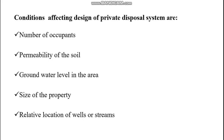Conditions affecting the design of a private disposal system — cesspool or septic tank — include: number of occupants, permeability of the soil, groundwater level in the area, and size of the property.